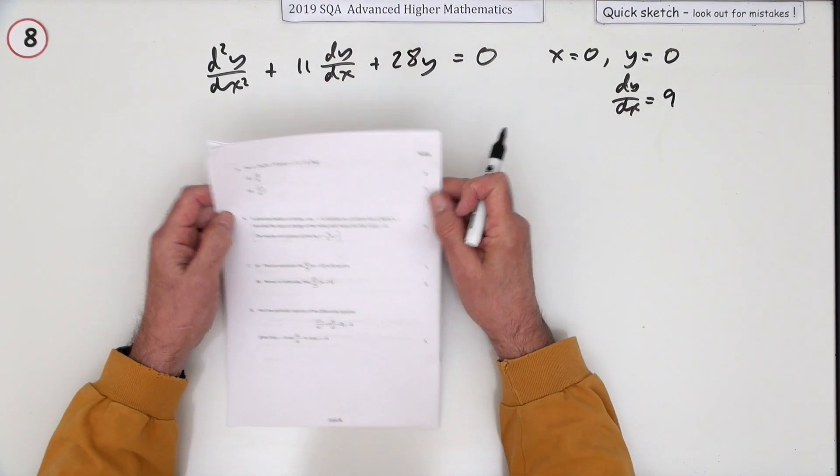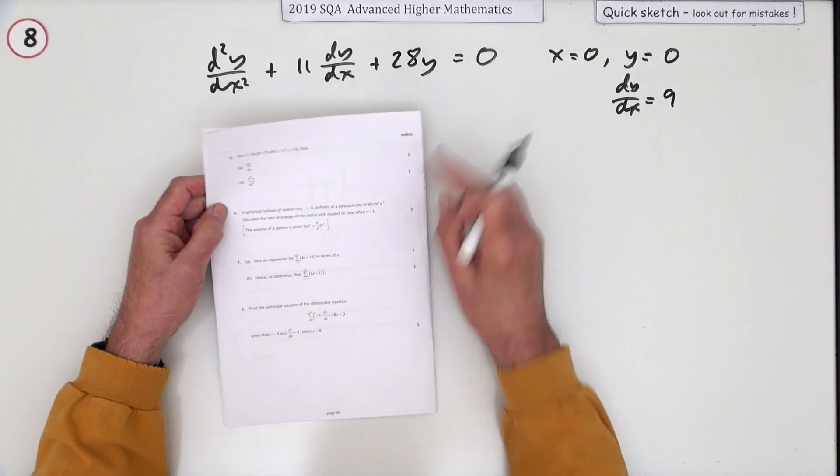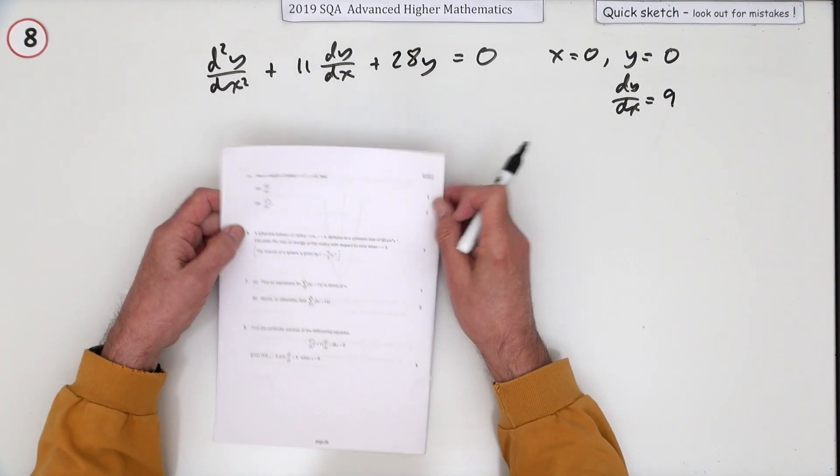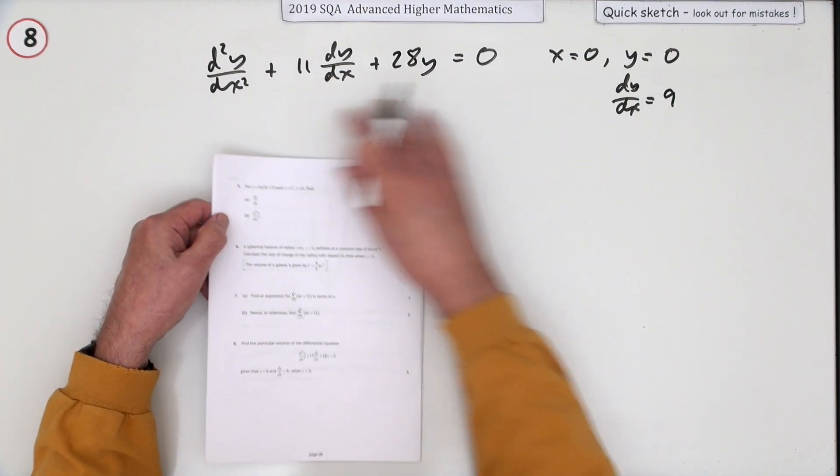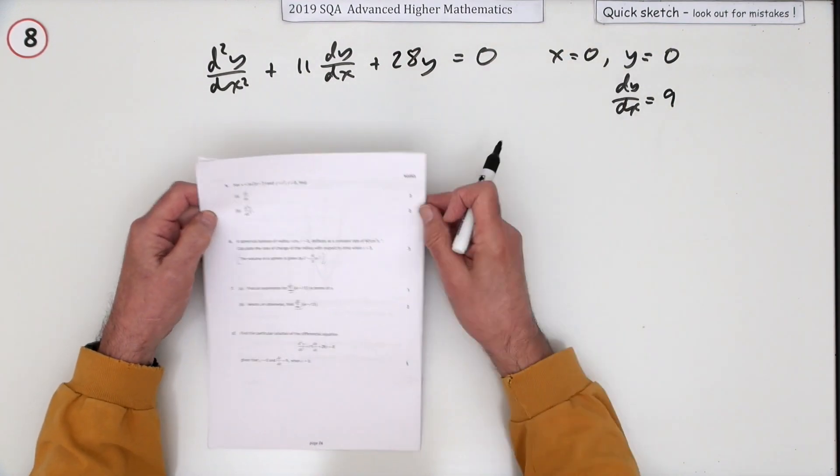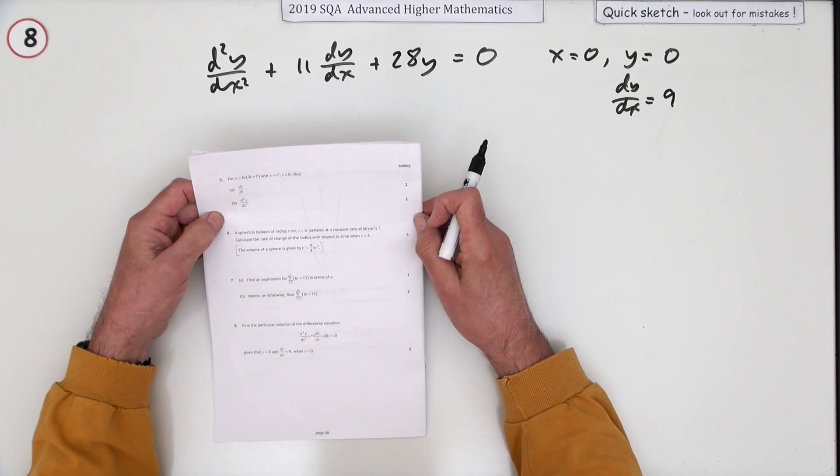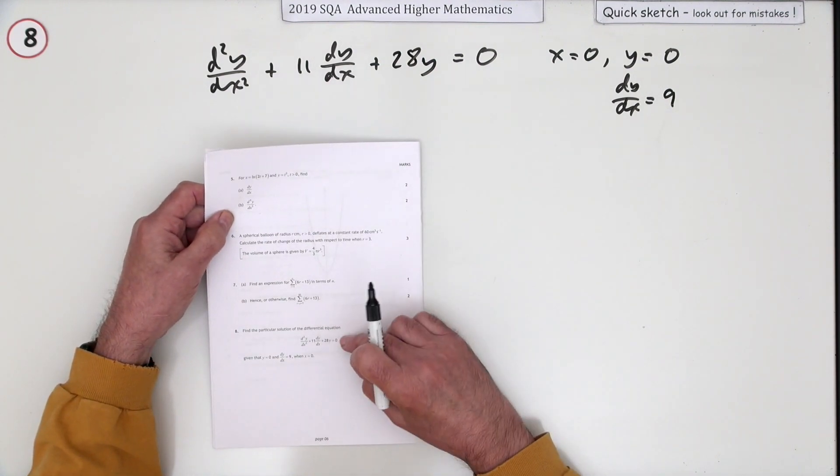Number eight then, from the 2019 Advanced Higher Maths, second-order differential equation. But it's appearing earlier in the paper than usual and it's only five marks where normally you can get about 10 for that, but there'd be much more signs and repeated signs and multiplying the x's and so on. Anyway, find the particular solution to this differential equation given these initial conditions.